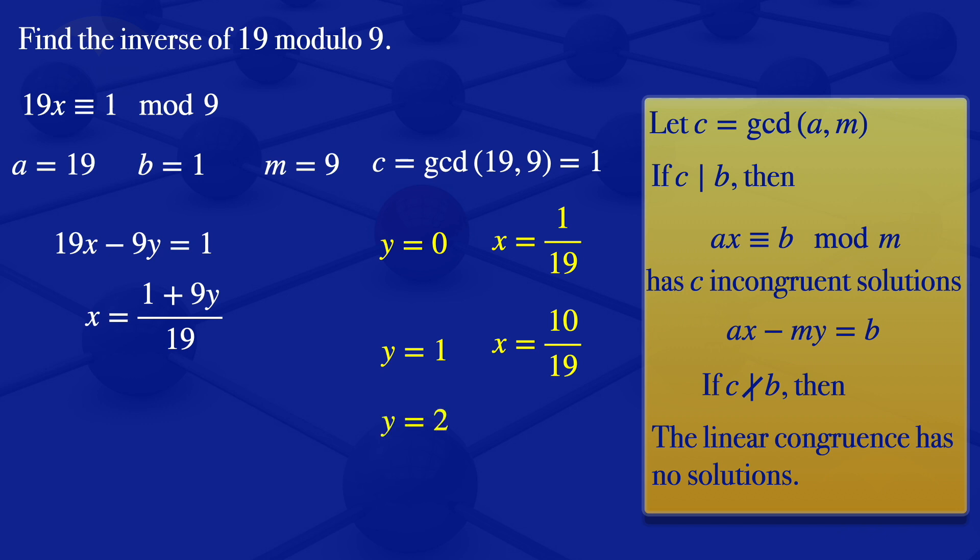Y equals to 2. Substitute y equals to 2 here, we would have 1 plus 9 times 2, that's 18 plus 1, which gives us 19. 19 divided by 19, which gives us 1. So we have x is equals to 1.